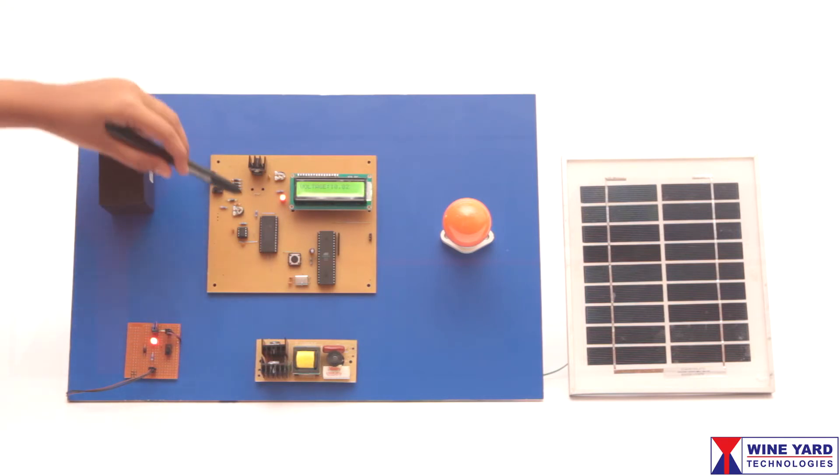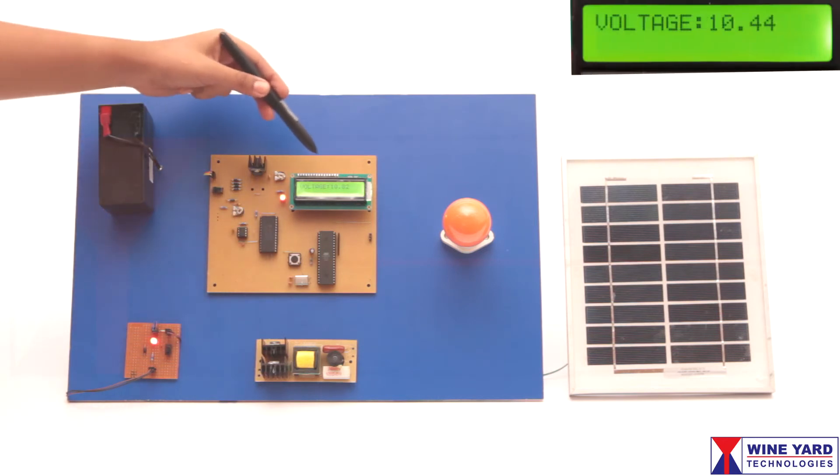Here, we are using this ADC to measure the battery voltage. This LCD displays the battery voltage. You can adjust the LCD contrast by varying this preset.